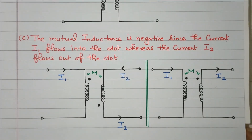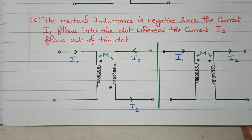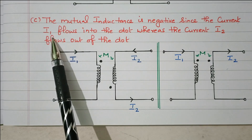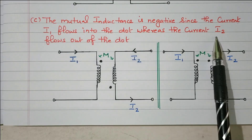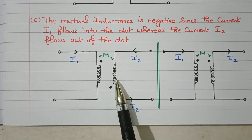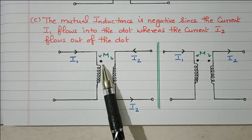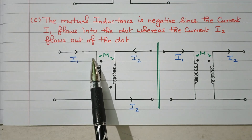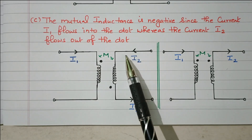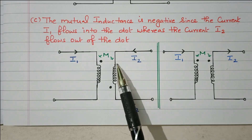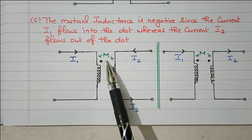The third case: one current enters the dotted end, another current enters the undotted end, so mutual inductance is negative. Consider two coils L1 and L2. The dot is at the upper end for coil one and at the lower end for coil two. Current I1 enters the dotted end of coil one, but I2 enters the undotted end of coil two. Both are different, so this mutual inductance will be negative.